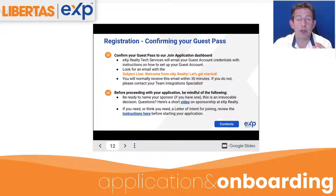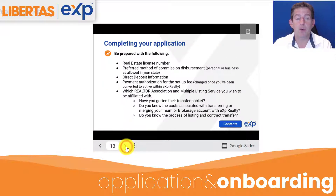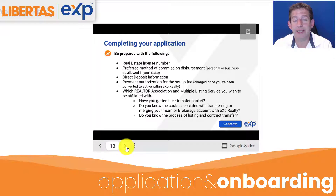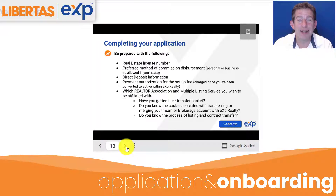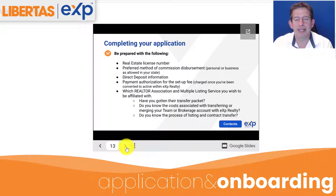Now when you're about to start your application, you're also going to want to make sure that you have the following handy. Your real estate license number, if you have one. There are some states where you can do a letter of intent pre-license, but this tutorial is going to talk about doing an application with a real estate license.